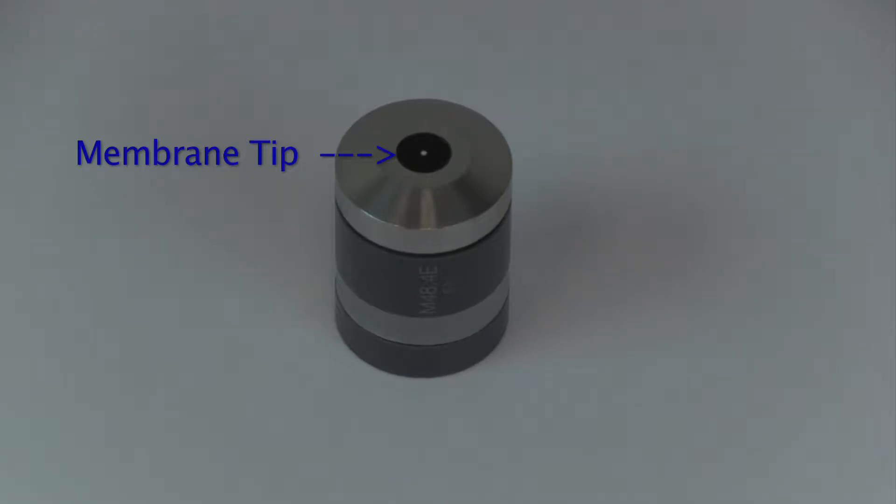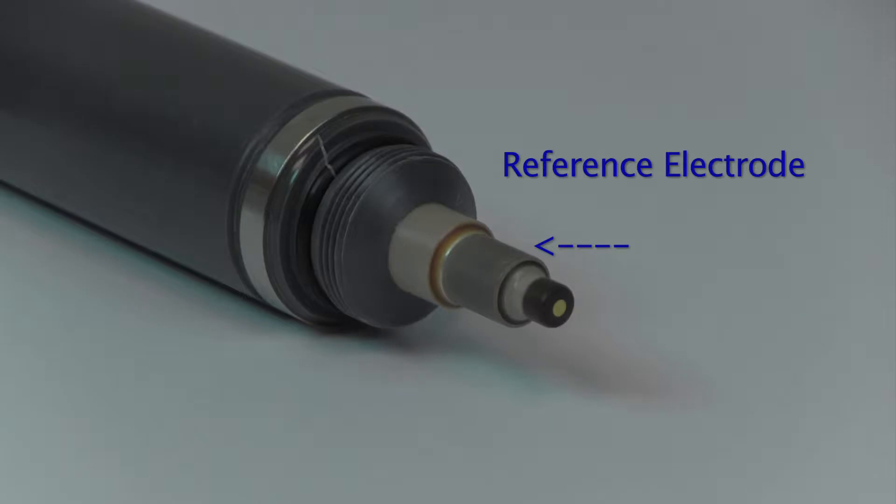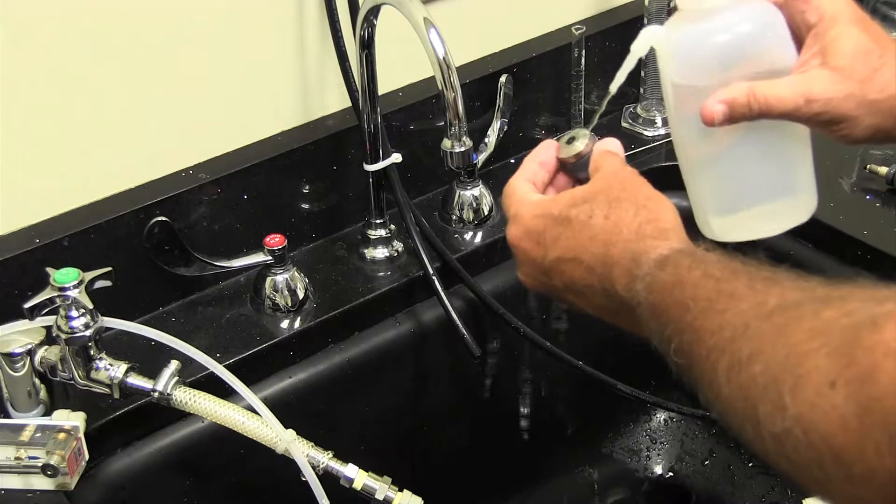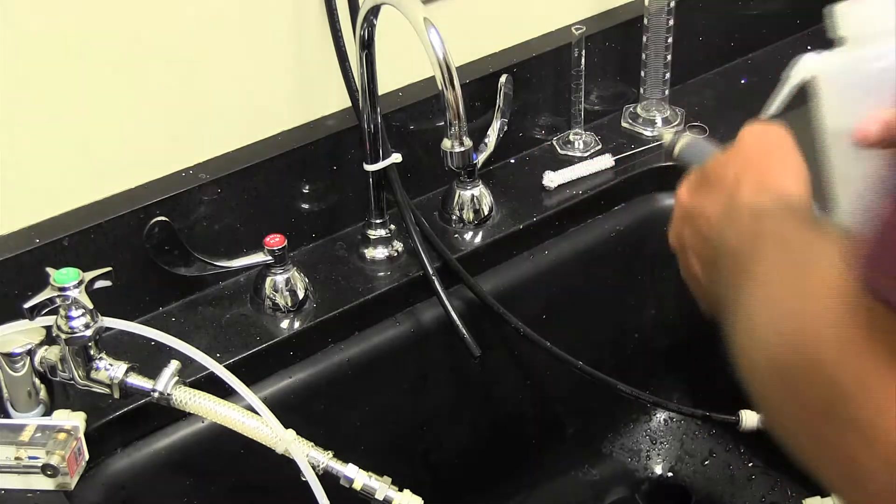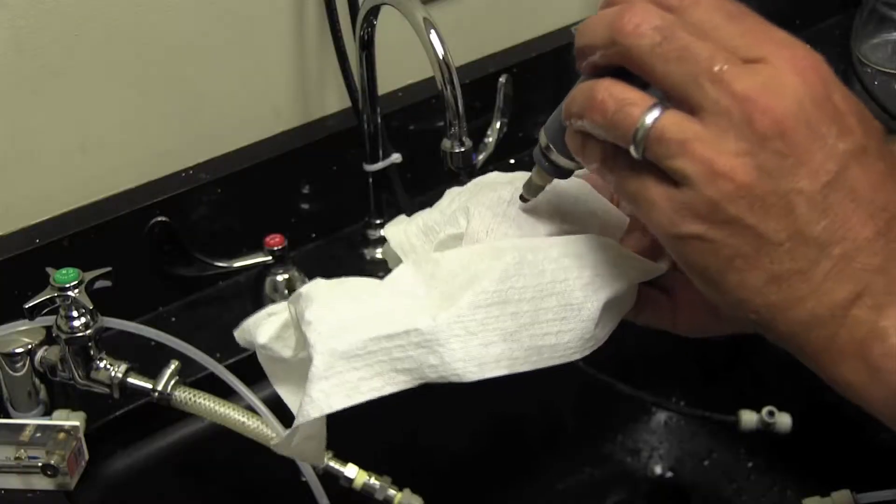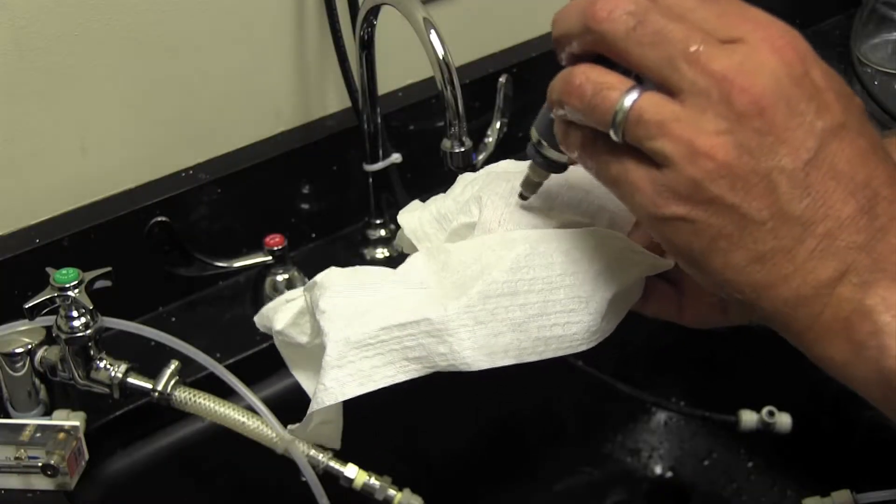Also, do not touch the membrane surface, which is located on the tip of the cap, or the gray colored reference electrode. It is okay to rinse these surfaces to flush away any old electrolyte, and then use a paper towel to dry the gold tip of the working electrode.